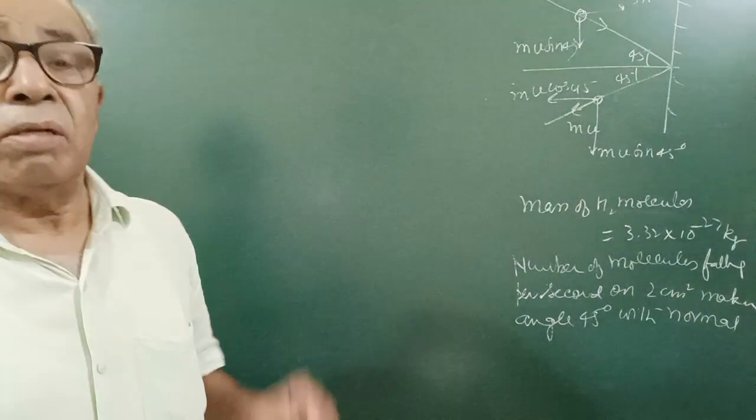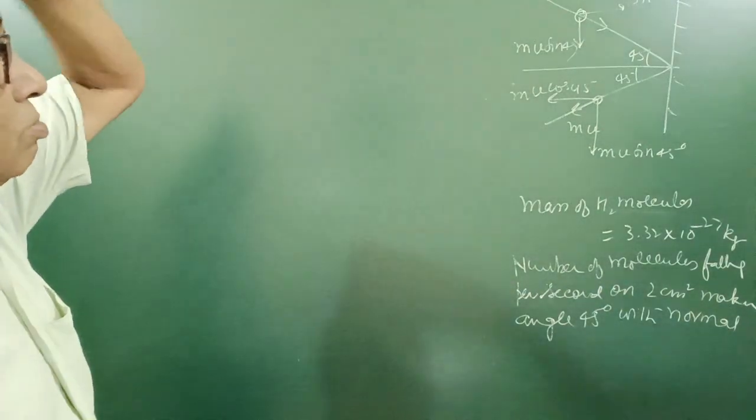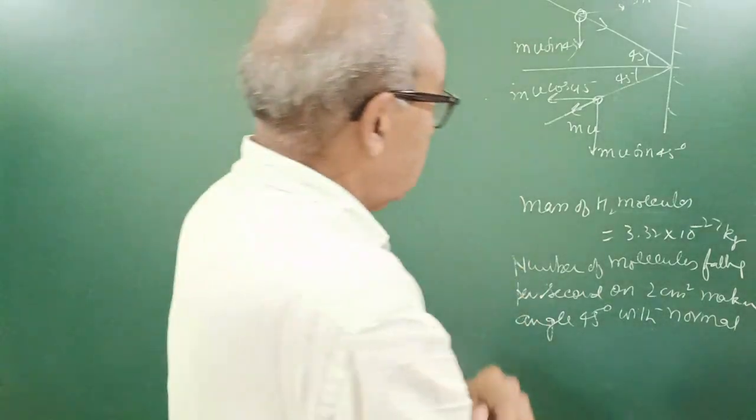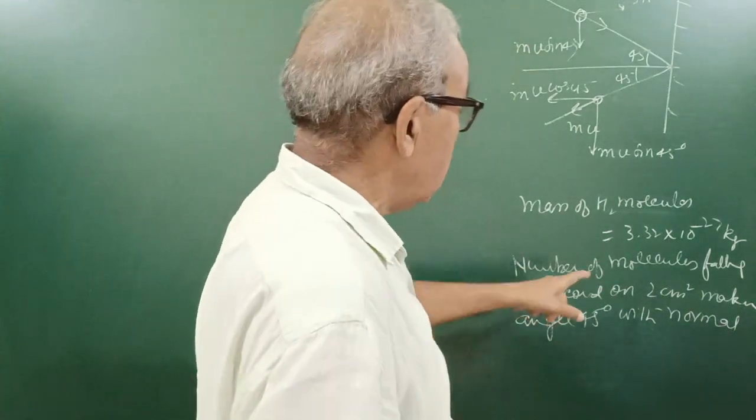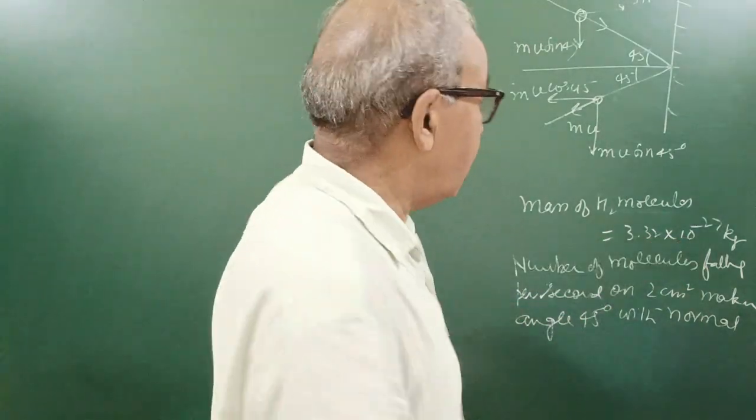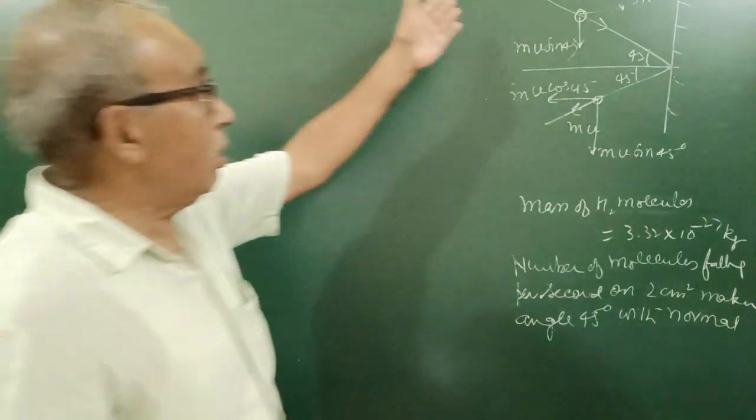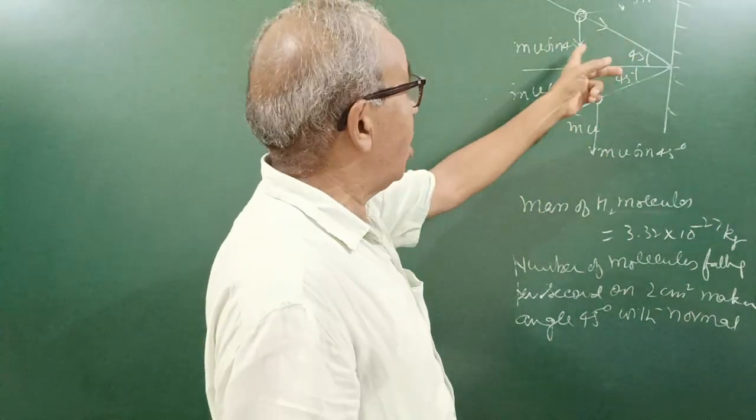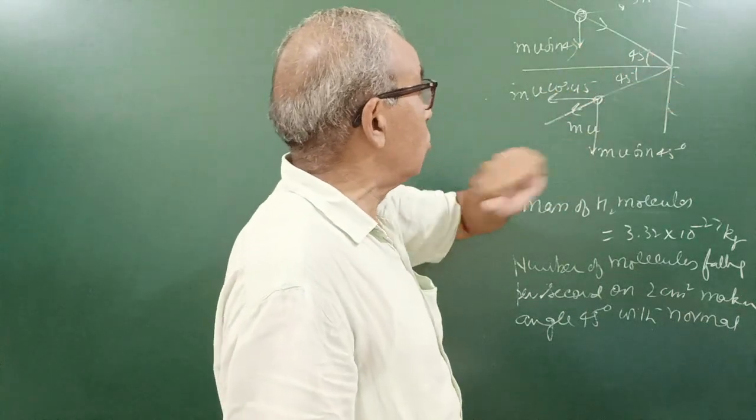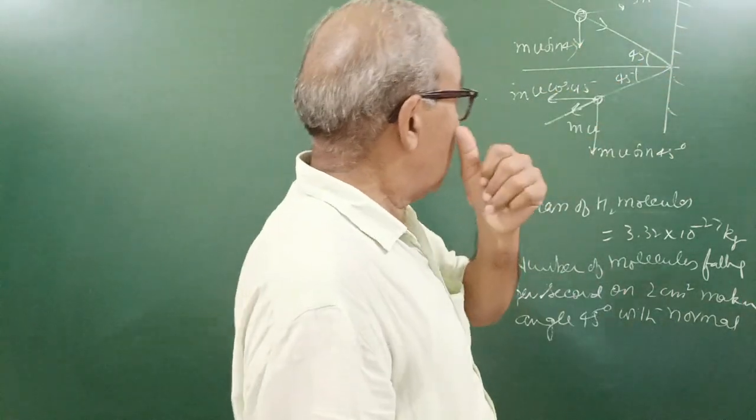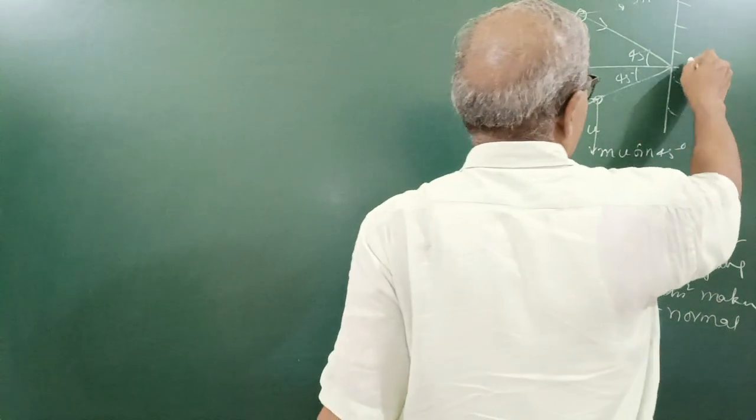Yes dear children, here is the question: hydrogen molecules each of mass 3.3 times 10^-27 kg are falling, making an angle of 45 degrees normal to the surface in an area of 2 cm square.